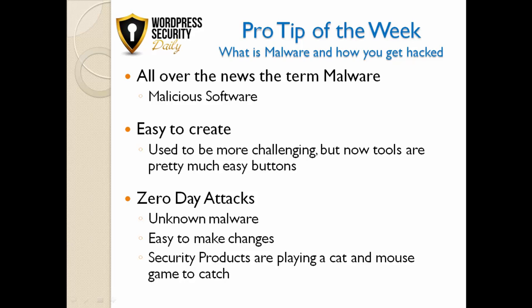Now the tools are so plug-and-play, it's like having your own easy button. A zero-day attack is basically unknown malware, something that hasn't been seen before. It's easy to turn known malware into unknown malware. But security technology is getting better — it's looking at heuristics, how the malware acts. Even though the signature may be different, if it's acting the same as a known variant, it'll flag on that. The security cat-and-mouse game is going strong, but hackers are always going to be one step ahead.